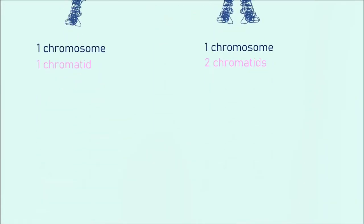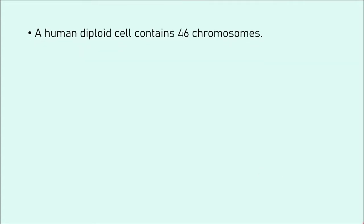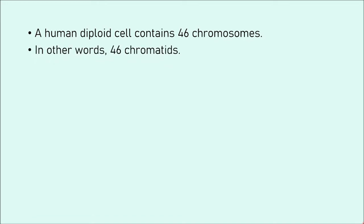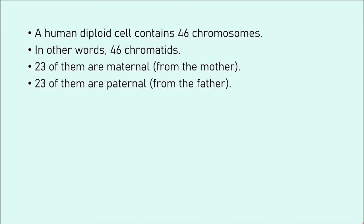A human diploid cell — a normal body cell, not a gamete or sex cell — contains 46 chromosomes, in other words 46 chromatids or 46 sticks on their own. 23 of them are maternal, coming from the mother, and the other 23 are paternal, coming from the father. This is the case in every single diploid cell in the body.